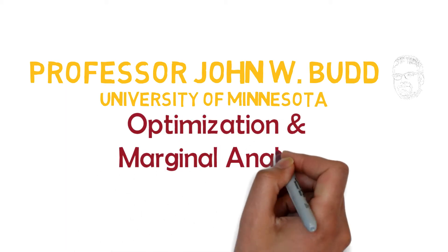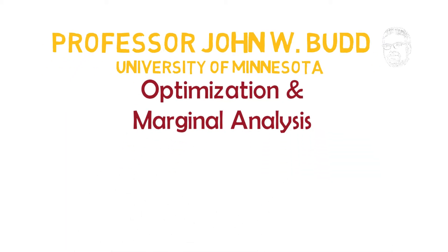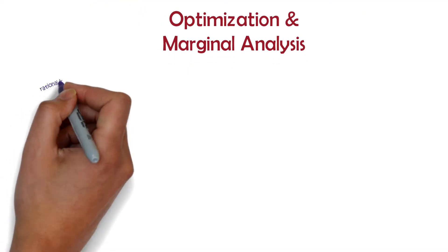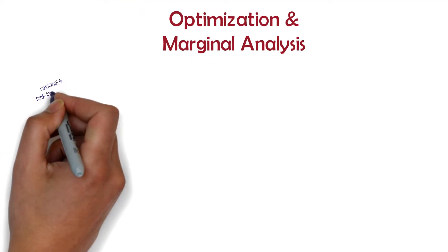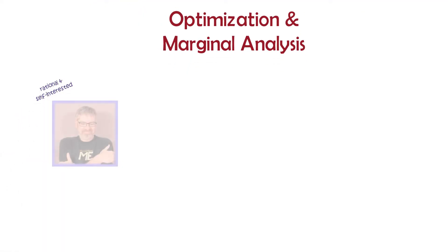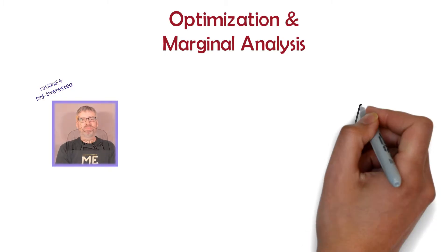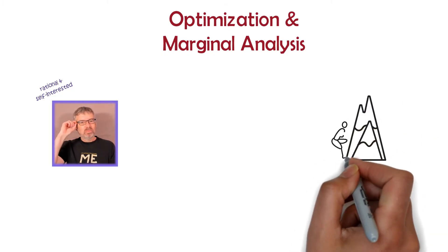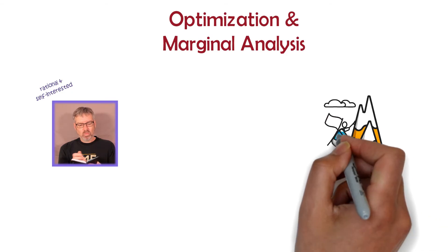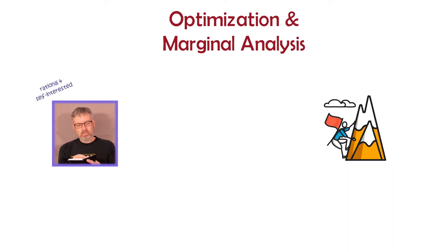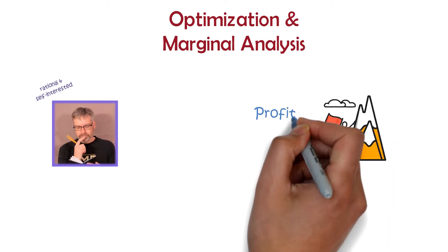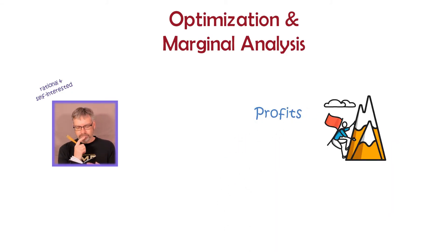Optimization and marginal analysis. Central assumptions and typical economic approaches to thinking about behavior include economic agents being rational and self-interested, so economic agents are seen as having an objective or overarching goal. Classically, firms are modeled as desiring profits and individuals as seeking utility.